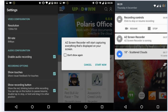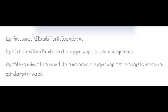Step 1: Free download AZ Recorder from the Google Play Store. Step 2: Click on the AZ Screen Recorder and click on the pop-up widget to set audio and video preferences. Step 3: When you make a call or receive a call, click the recorder icon on the pop-up widget to start recording. Click the record icon again when you finish your call. I hope you people understand the video and enjoy. Goodbye.